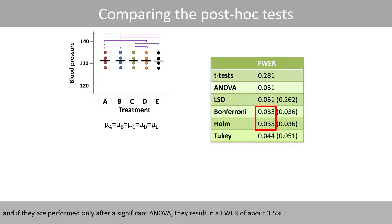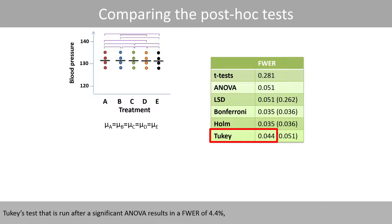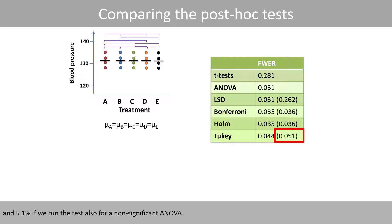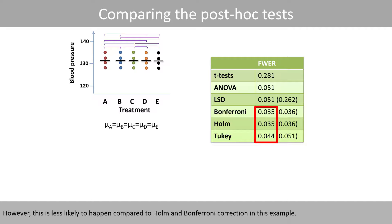When Bonferroni or Holm are performed only after a significant ANOVA, this means that in 16% of simulations we get inconsistent results where we obtain a significant ANOVA but all post-hoc tests turn out to be non-significant. Tukey's test run after a significant ANOVA results in a family-wise error rate of 4.4%, and 5.1% if run also for a non-significant ANOVA. Tukey's test might therefore also identify a non-significant difference after a significant ANOVA, though this is less likely to happen compared to Holm and Bonferroni correction in this example.